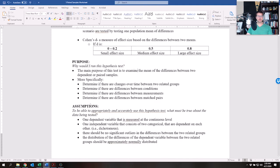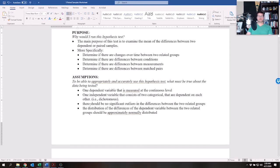Assumptions: to be able to appropriately and accurately use the hypothesis test, what must be true about the data being tested? We've got to have one dependent variable that's measured at a continuous level. Once again, we're dealing with continuous level data.